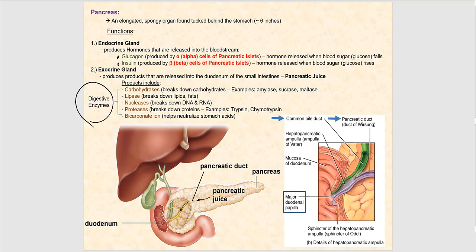In addition to digestive enzymes, pancreatic juice also contains bicarbonate ions. These will neutralize the hydrogen ions from the chyme coming from the stomach. Once chyme enters the duodenum, we no longer call it chyme — we call it intestinal juices. So: chyme is in the stomach, intestinal juices are in the small intestines, and pancreatic juices are produced by the pancreas.